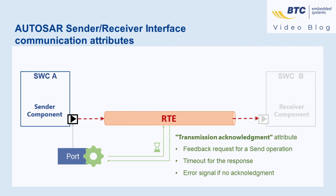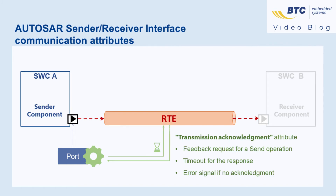To make sure data has been correctly transmitted, a sender component can request a feedback for a send operation using the attribute transmission acknowledgement. Within a given timeout, if the acknowledgement has not been received, the RTE returns an error which can be captured for an alternative operation.